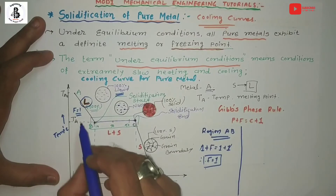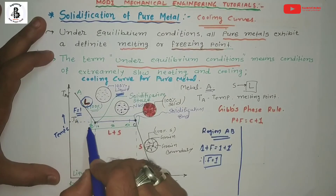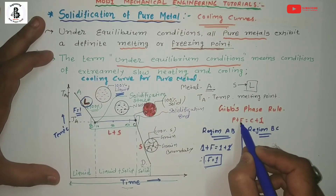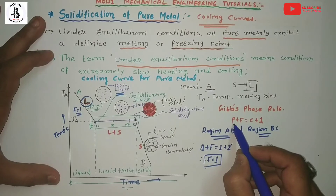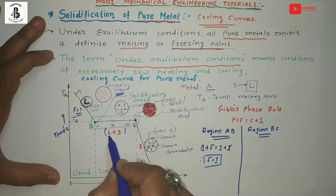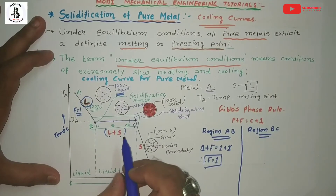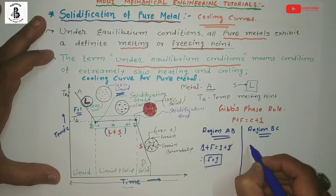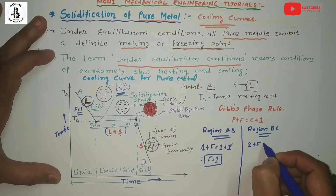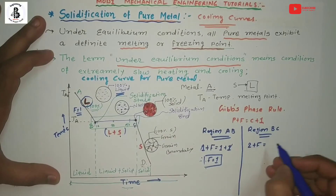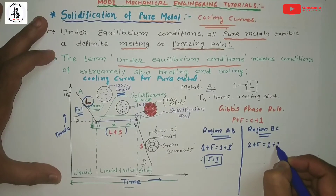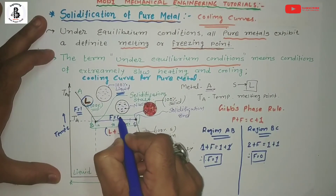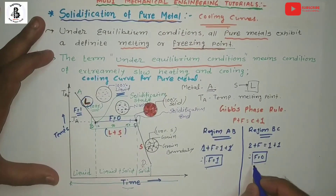For the B-to-C region, applying P + F = C + 1: P is the number of phases. For B to C there is liquid plus solid, so P = 2. C is a single component system, C = 1. Therefore: 2 + F = 1 + 1, so F = 0. F = 0 means constant temperature solidification process — the solidification of pure metal at constant temperature.